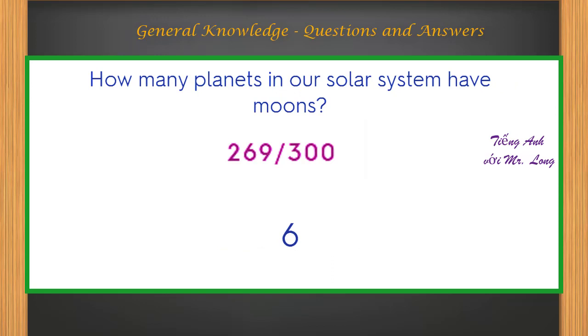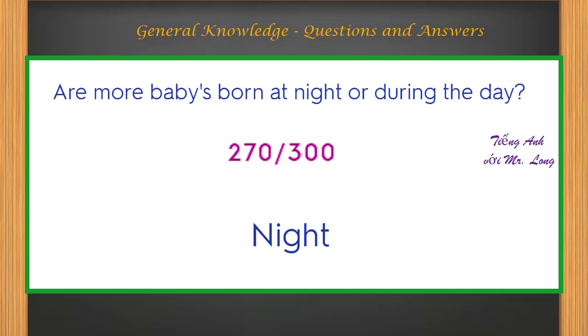How many planets in our solar system have moons? Six. Are more babies born at night or during the day? Night.